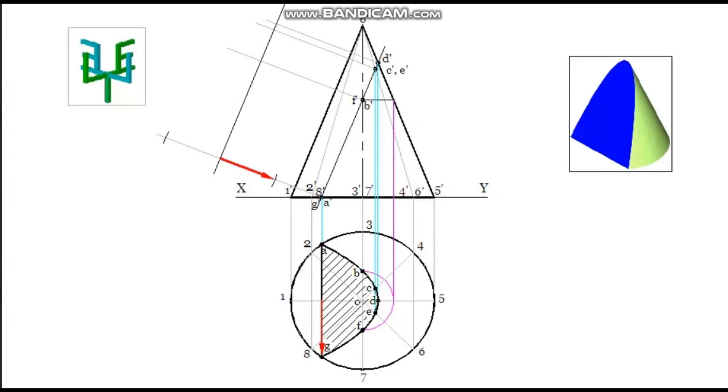These distances of points can be measured from XY line also. Here, the distances of A and G are same when you are measuring it from the center line 1, 5. That is why we are measuring it from the center line.